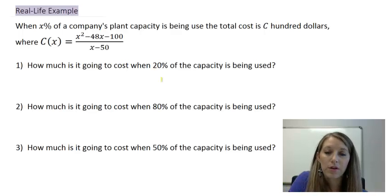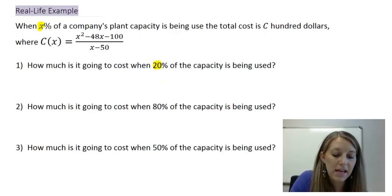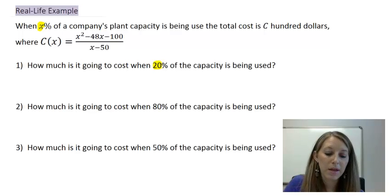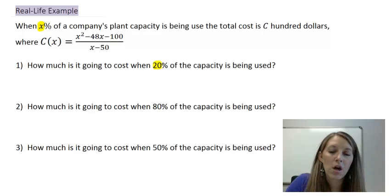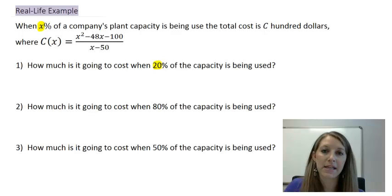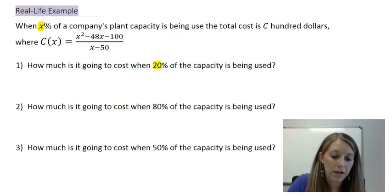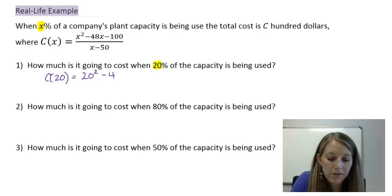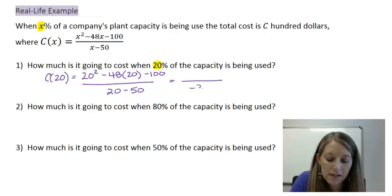So, to simplify this, we use our college algebra methods, and we take this 20, and we plug it in for X every place in our equation, because 20 represents how much percentage we are running that plant capacity at that specific time. So, in example 1, we just plug in 20. C of 20 is equal to 20 squared minus 48 times 20 minus 100, all over 20 minus 50. The bottom is really easy. Of course, that gives us negative 30.